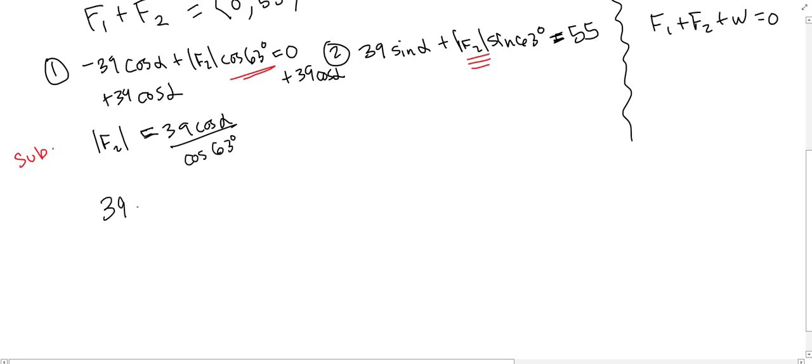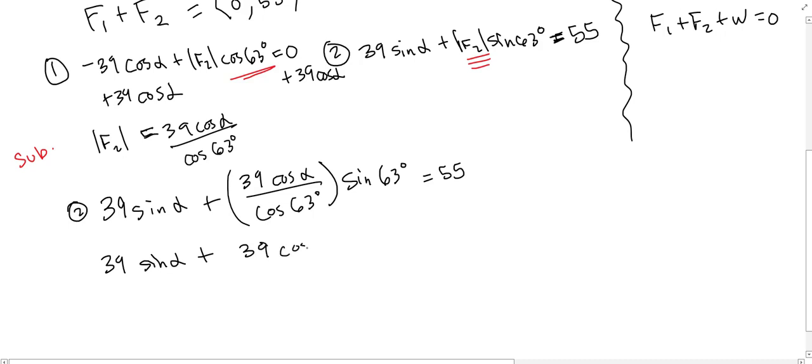So in equation 2, I now have 39 sine alpha plus, replace magnitude of F2, and that's going to be times sine 63 equals 55. And so that's going to be 39 cosine alpha over cosine 63. Now from here, you can simplify this using some trig facts, but you don't really have to. I guess maybe I'll do one simplification step. We're just going to go ahead and graph this to get the zeros, because it's tricky to solve this using trig. So this is cosine alpha, and the fact that this is sine 63 over cosine 63, I'm just going to go ahead and call that tangent. So tangent of 63 degrees. So we'll just graph this, and we'll find out what alpha should be.